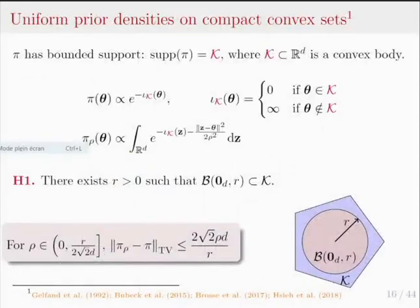If the posterior distribution has bounded support — namely the support of pi is a convex body K within R^D — under a simple assumption we can also obtain an upper bound on the total variation distance between pi_rho and pi. This is a generalization of results by Nicola Bross, Alain Durmu, and Eric Moulines in their 2017 paper.